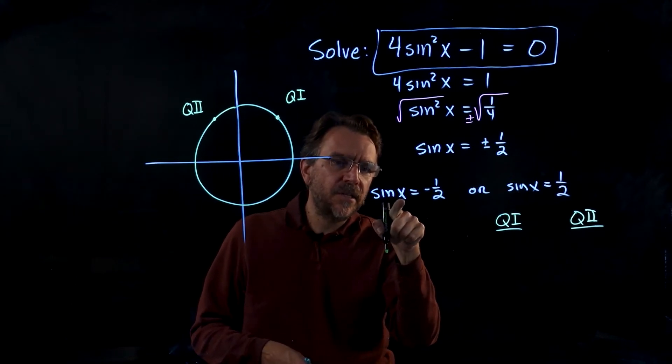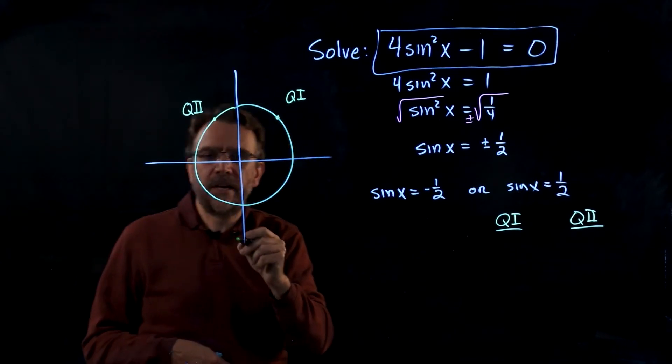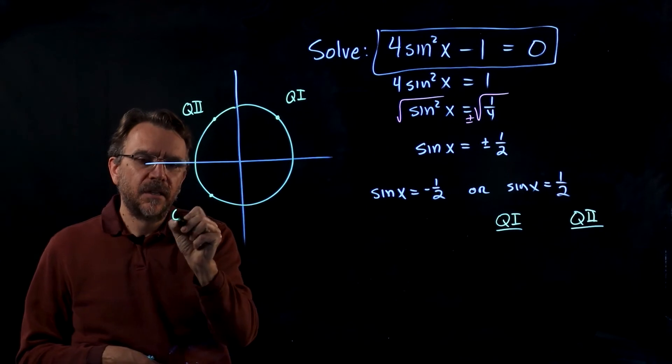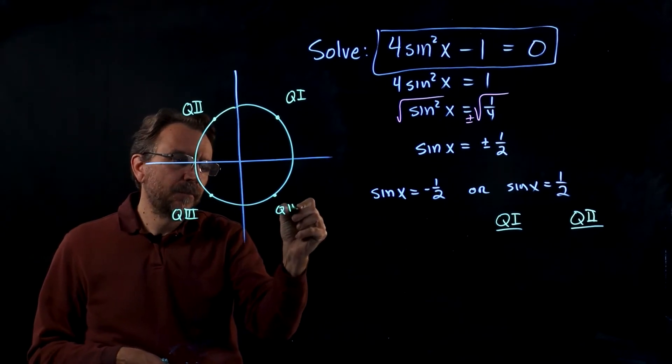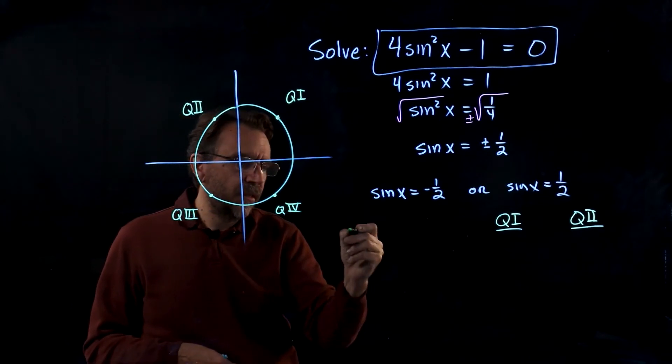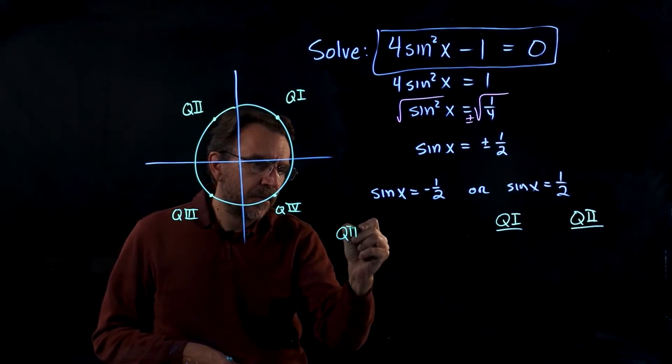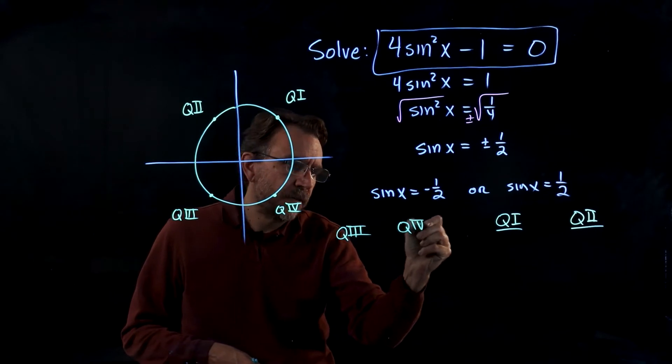Now when I look at this equation, we have sine x equals negative 1 half. So sine is negative in q3 and q4. So this is going to have q3 answers and q4 answers.